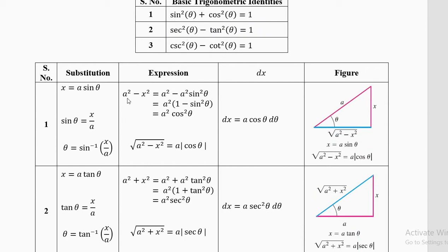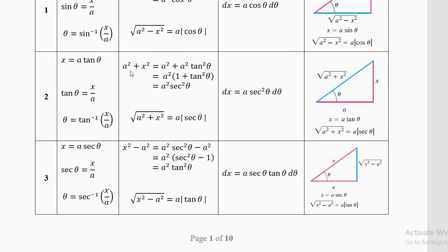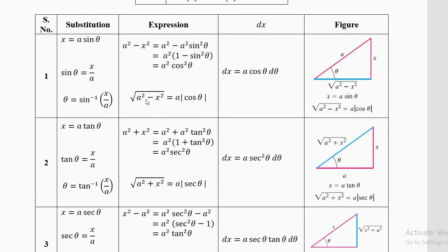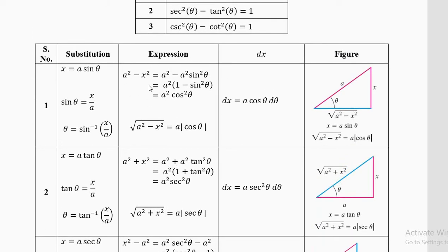There are three scenarios in this chapter. First: integration involving (a² − x²) to some power other than 1 — if the power is 1 we can integrate directly. Second: (a² + x²) with power not equal to 1. Third: (x² − a²) with power not equal to 1. The power can be ½, −½, −1, −2, or other combinations.